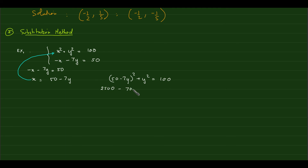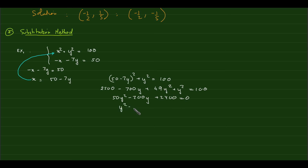Combining terms: 50y² – 700y + 2400 = 0. Dividing both sides by 50 gives y² – 14y + 48 = 0. Now factor: 48 = 6 × 8, and –6 + (–8) = –14, so we get (y – 6)(y – 8) = 0.